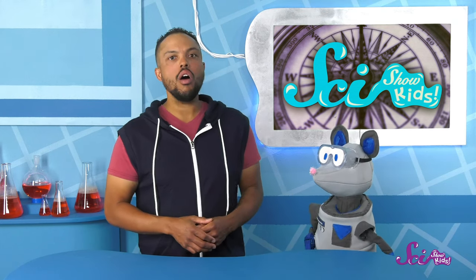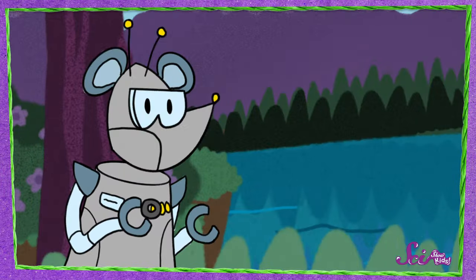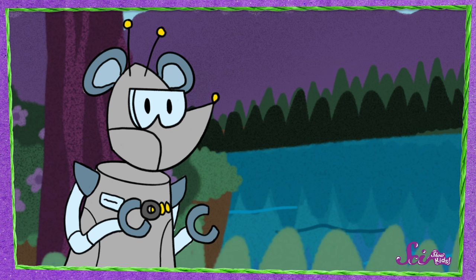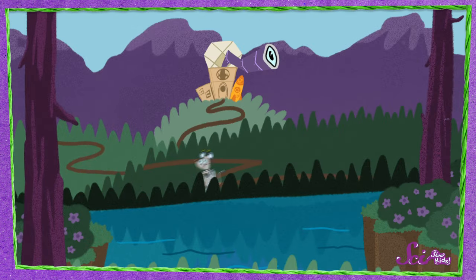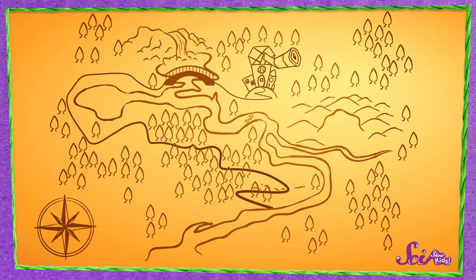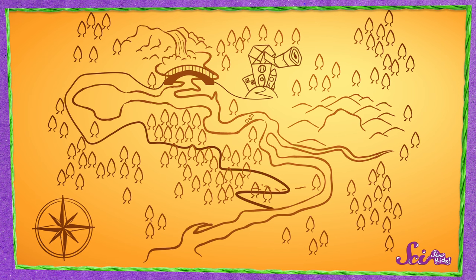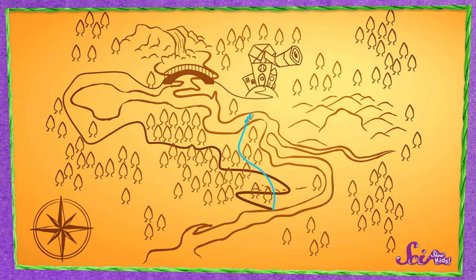Is everything okay? Oh, I see. Squeaks was trying out his new magnet by the river, and the path there is really long and windy. So it took him a while to find his way back to the fort. The river is directly south of here. If only you had had a compass, then you could have taken a shortcut.